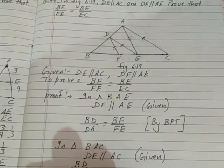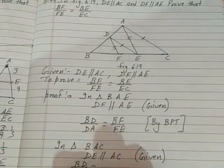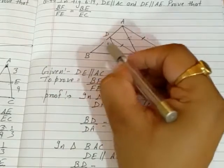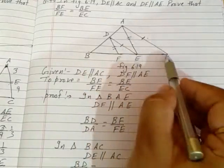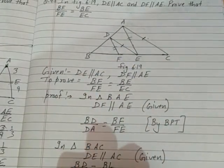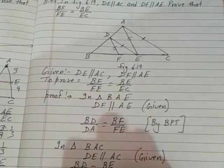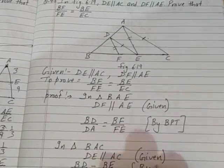Given DE parallel to AC. By BPT, you can write BD/DA equals BE/EC.